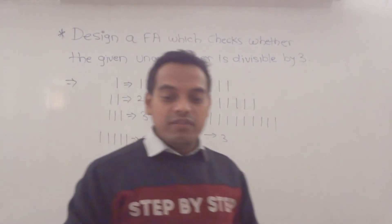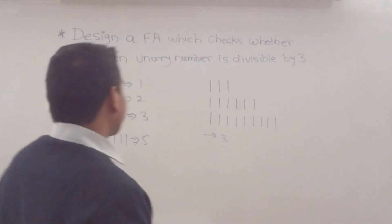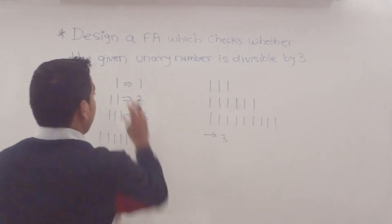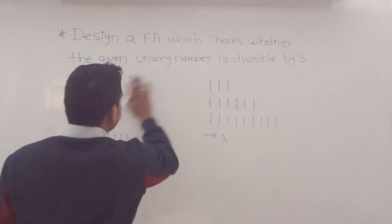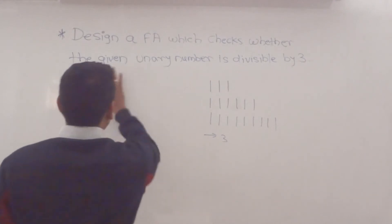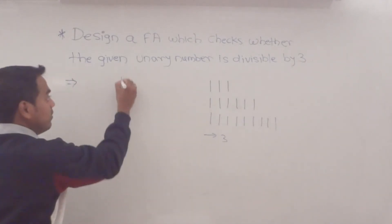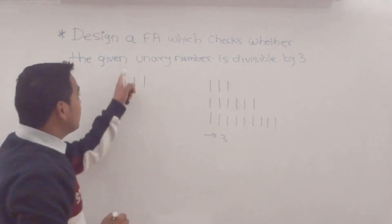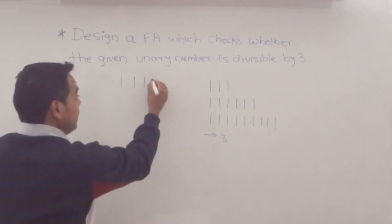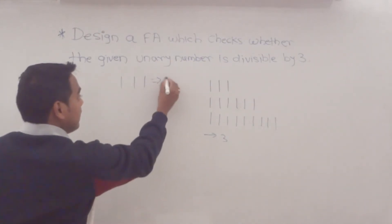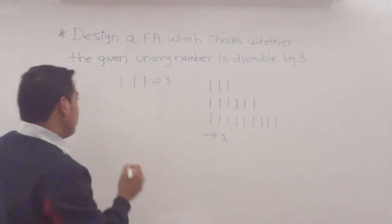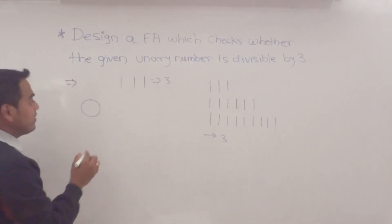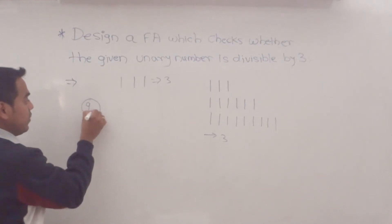So how do we design a finite automaton? First, the minimum input string we consider is 1, 1, 1. If we consider the minimum string as 1, 1, 1, it is represented as 3. So we always start with the initial state.